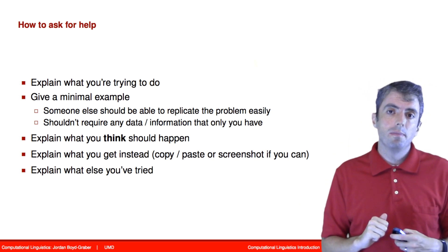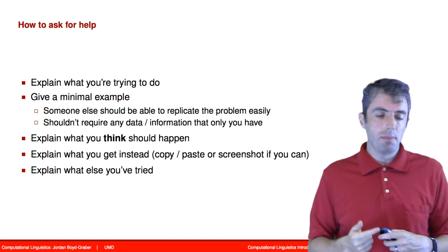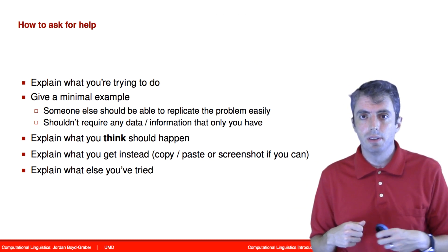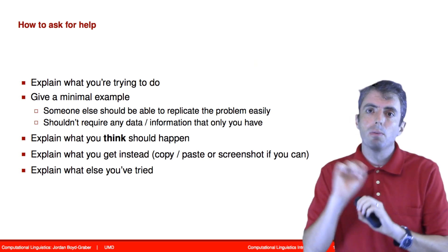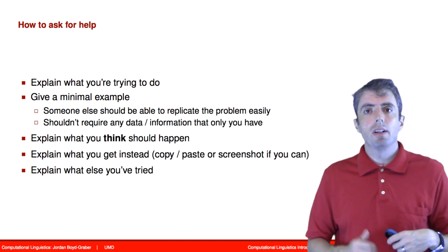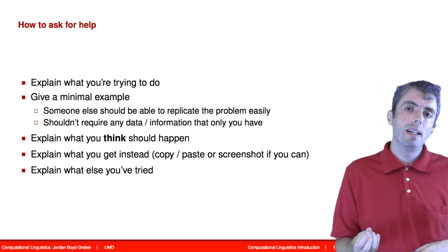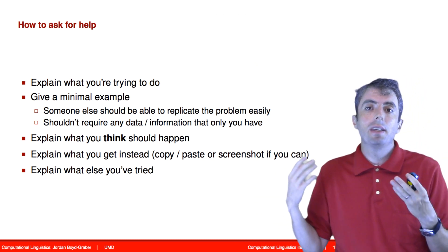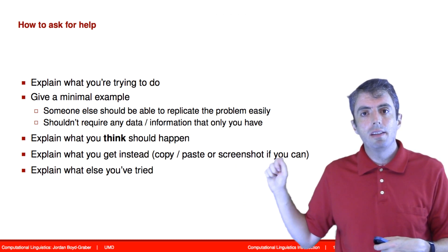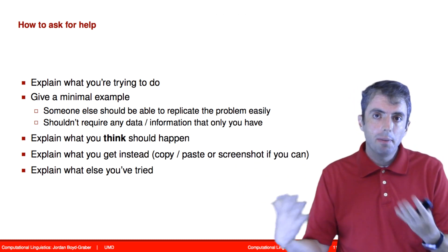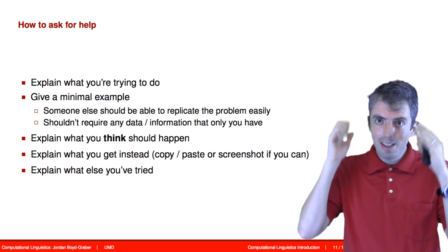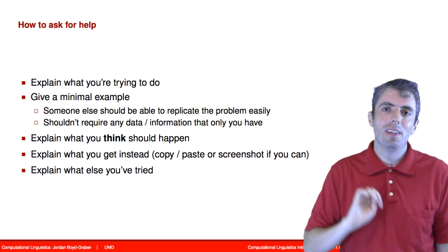When asking a technical question, first explain what you're trying to do. Second, provide a minimal example that anyone else should be able to run — start with a fresh clone of the homework repository, run a simple command, modify the code slightly, run that command again, and the problem should be visible. If the TAs cannot reproduce your error, it will be much harder for them to help you. You should also explain what you think should be happening and what you get instead. Always provide your output, especially if you get an error message. And finally, explain what else you've tried, as that helps the TAs understand your thought process so they can tailor their answer to the help you need.